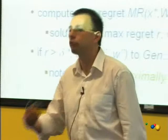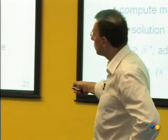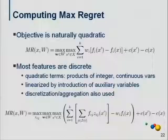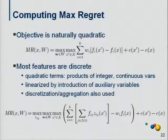In the interest of time I'm not going to say much about computing the max regret program. We end up with quadratic terms here because the adversary has to choose both an allocation and utility function, but there are various tricks to linearize this thing.